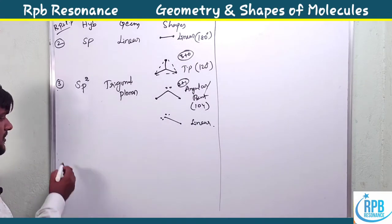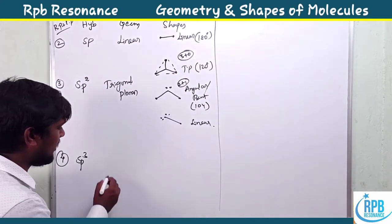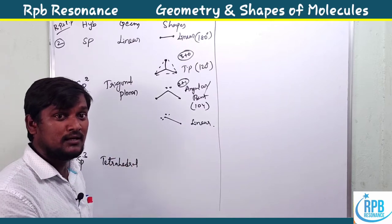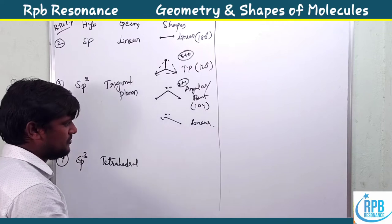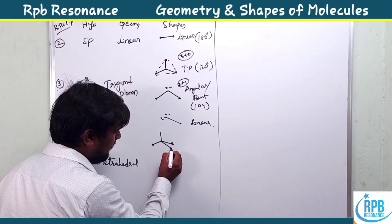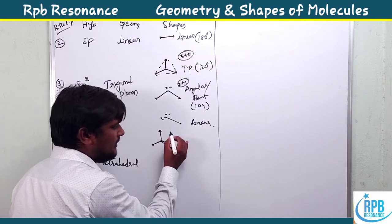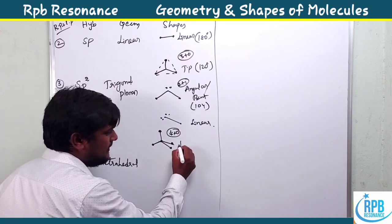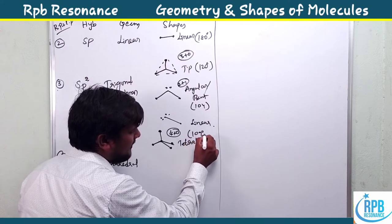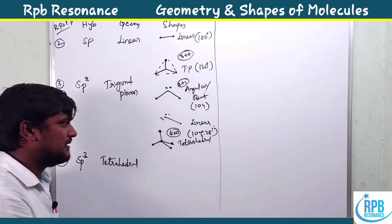Moving on to four total bond pairs and lone pairs: hybridization is sp3 and geometry is tetrahedral. The tetrahedral geometry has more than four types of structures. With four bond pairs and zero lone pairs, the shape is tetrahedral with bond angles of 109.28 degrees.